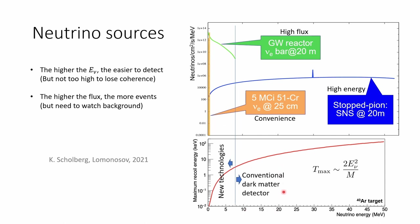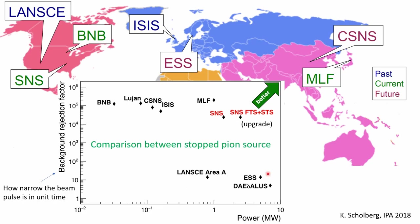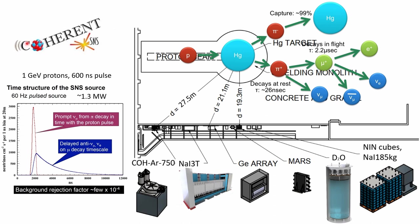This plot compares various accelerator-based neutrino sources. The x-axis is the power of the proton beam — the higher the power, the better, since more neutrinos can be created. The y-axis is the background rejection factor, basically how narrow the beam pulse is per unit time — the narrower, the better, since less random background gets into the signal window. Based on these two considerations, the Spallation Neutron Source at Oak Ridge National Lab is a very good choice. That's why the COHERENT collaboration placed various detectors around the SNS, which has a very powerful beam and very narrow beam pulses. Another advantage of COHERENT is its deployment of multiple targets, which allows a systematic check of CEvNS over a wide mass range.